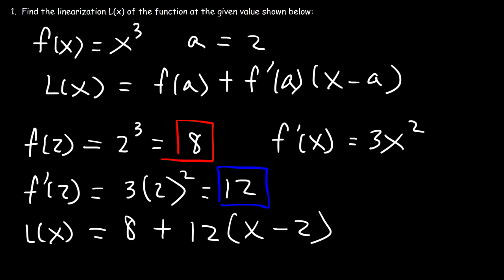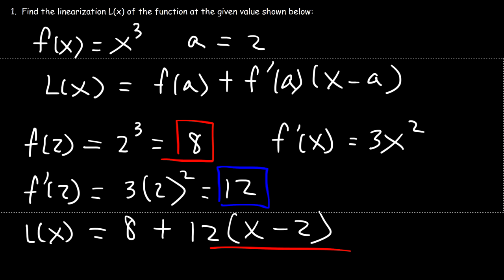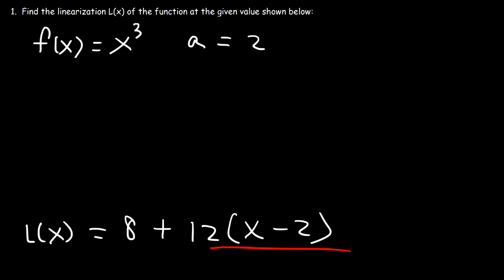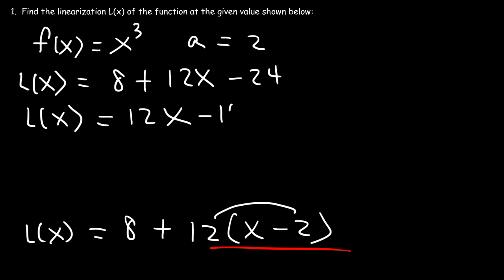Now, at this point, all we need to do is simplify this equation. So let's distribute 12 to x minus 2. But first, I need to make some space. So it's going to be 8, and then 12 times x, and then 12 times negative 2, which is negative 24. And so 8 minus 24, that's negative 16. So L(x) is going to be 12x minus 16.